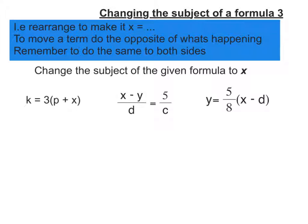So the first thing I need to do is remove that 3 so I can get out that bracket. Now, 3 is multiplying the bracket, so I am going to do the opposite, which is divide. So on the left-hand side, I'm just left with k over 3. And on the right-hand side, well, the 3 over 3, they cancel, so they disappear. So all I'm left with is p plus x. So there you go, I've got rid of that 3 and I've opened up that bracket.